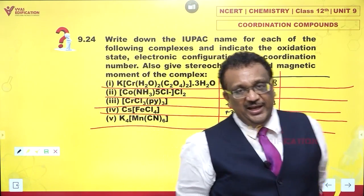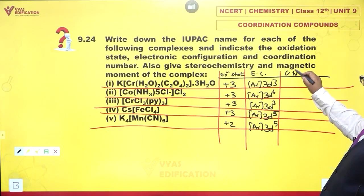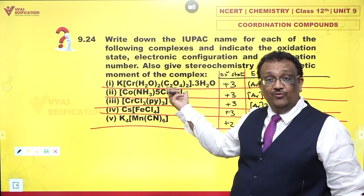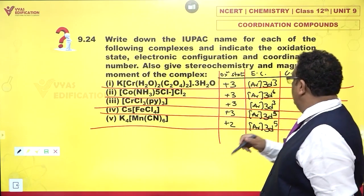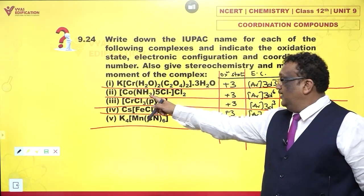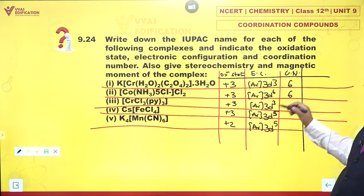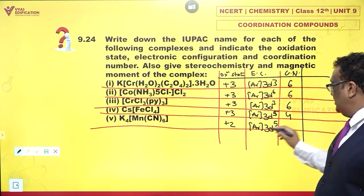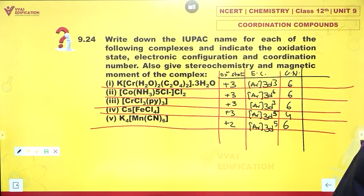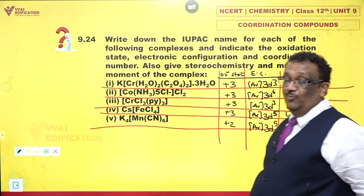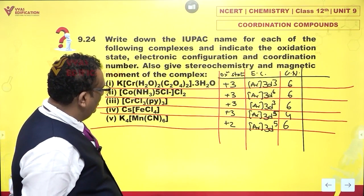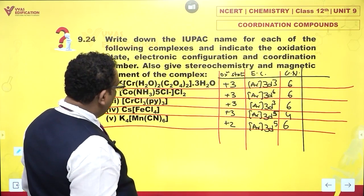Coordination numbers: the first complex has two aqua plus two bidentate oxalate giving six. Second has five plus one giving six. Third has three plus three giving six. Fourth is four. Fifth has six cyanide ions giving six. Coordination number is six for all except the fourth which is four. Now for electronic configuration and magnetic moments, let's draw box diagrams.